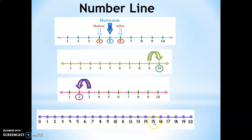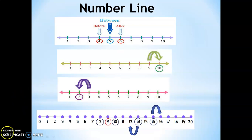Now let us take a look at a number line with numbers 1 to 20. What is the number that comes after 15? It is number 16. What is the number which comes before 13? The answer is number 12. Next, what is the number that comes between 8 and 10? The answer is number 9.